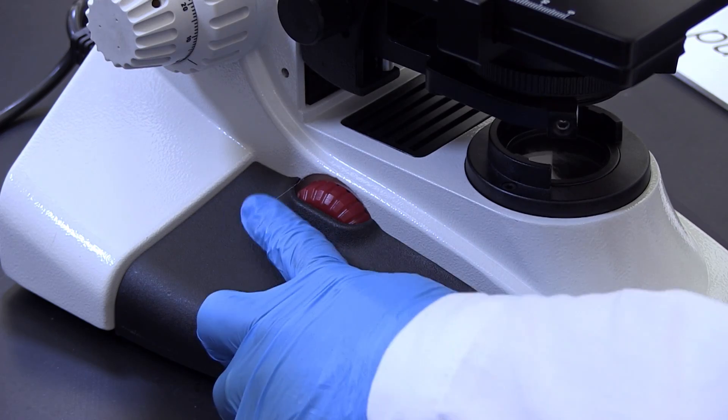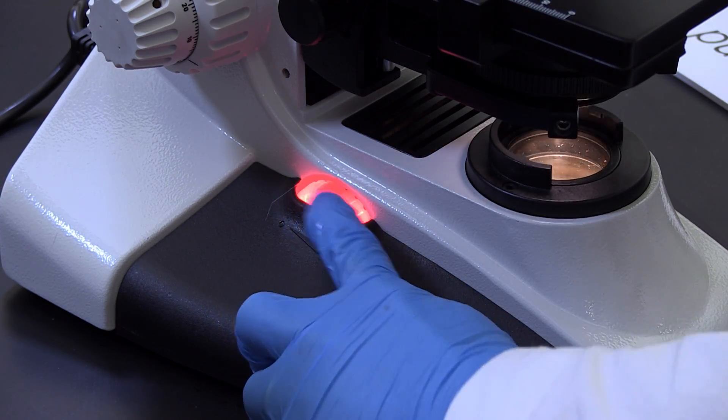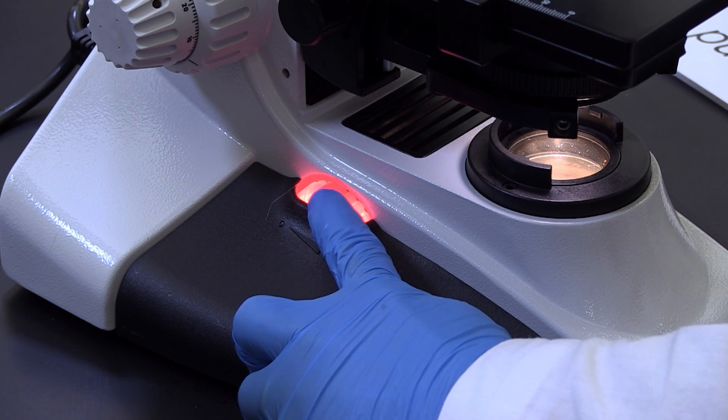A light source is located in the base of the microscope. A rotating wheel or knob can be used to adjust the intensity of the light.